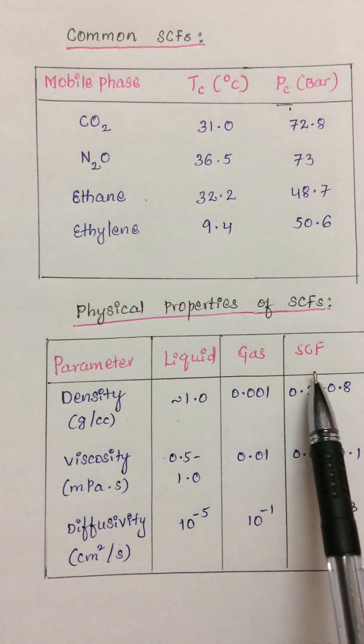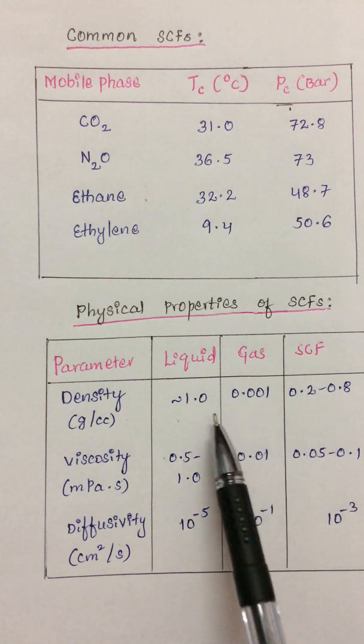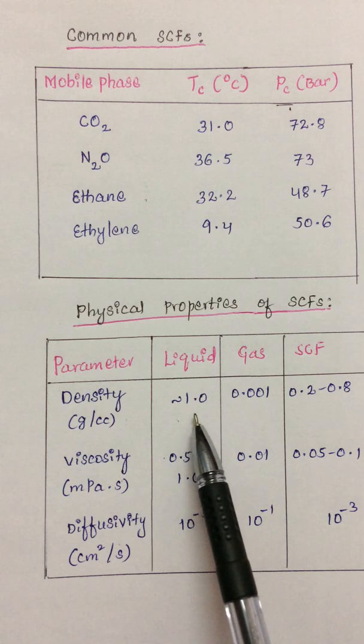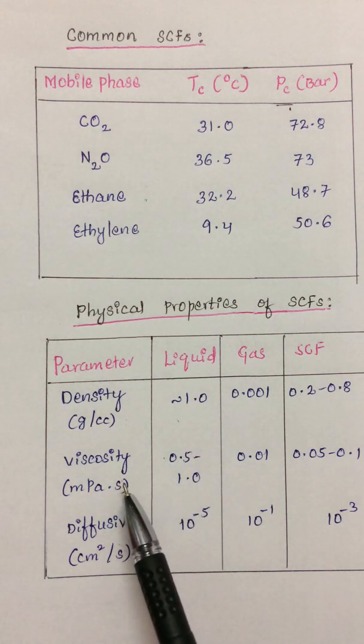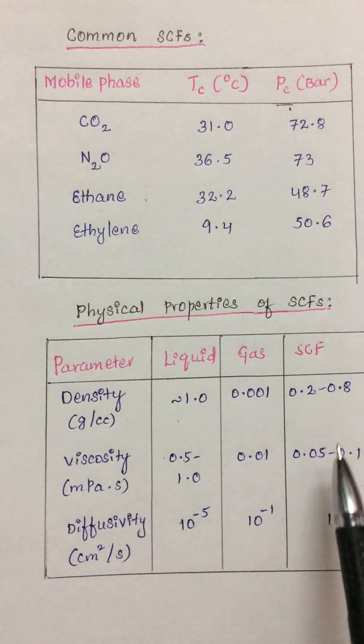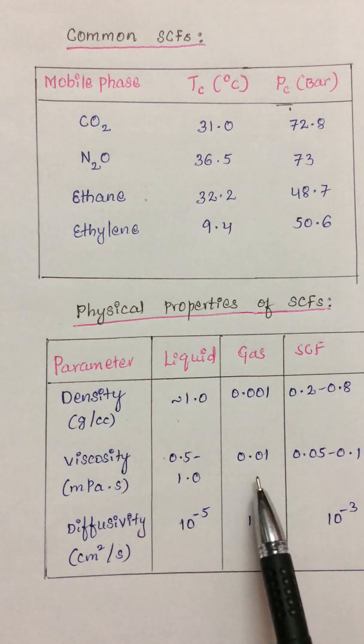About 0.001, and the supercritical fluid density is very much closer to that of the liquid. But when we look at the viscosities, the supercritical fluid viscosity is closer to that of the gas.